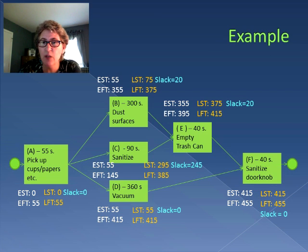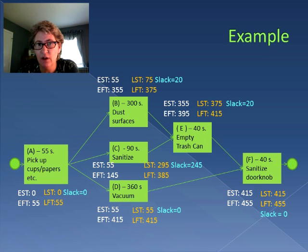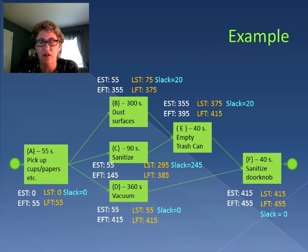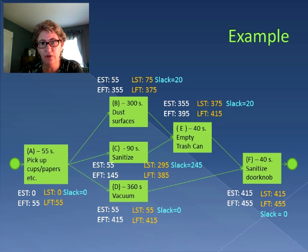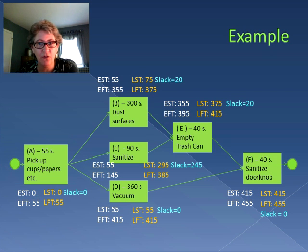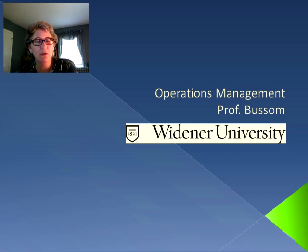It's very important to realize that when you look at this process flow diagram, all of the activities on the critical path will always have a slack of zero. It may take a few times to understand this, so I suggest you go over this example a couple of times, just to make sure you understand the forward pass and the backward pass. In the next session, we're going to be talking about process efficiency. I'll see you then.